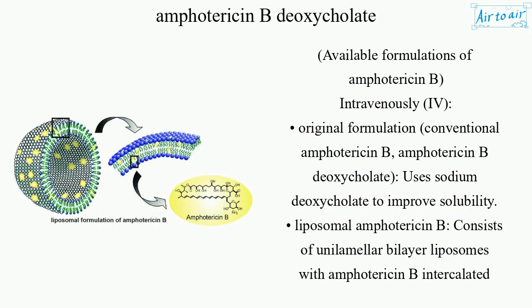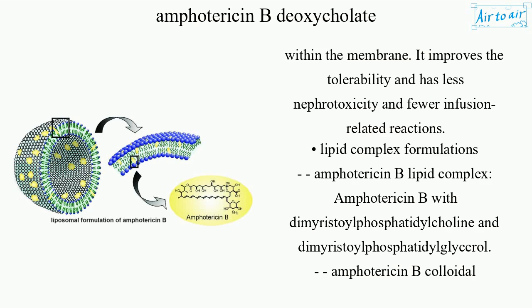Available formulations of Amphotericin B intravenously (IV): The original, conventional formulation is Amphotericin B-deoxycolate, which uses sodium deoxycolate to improve solubility. Liposomal Amphotericin B consists of unilamellar bilayer liposomes with Amphotericin B intercalated within the membrane; it improves tolerability and has less nephrotoxicity and fewer infusion-related reactions.